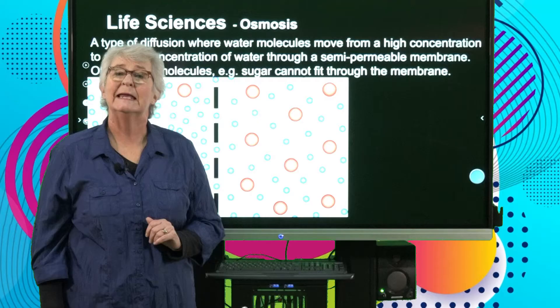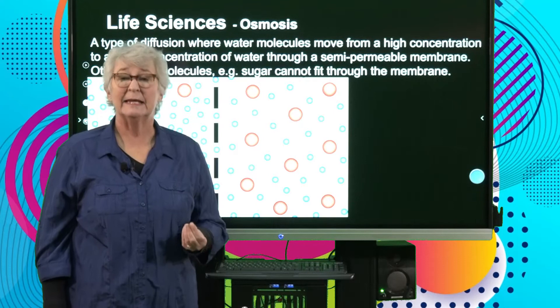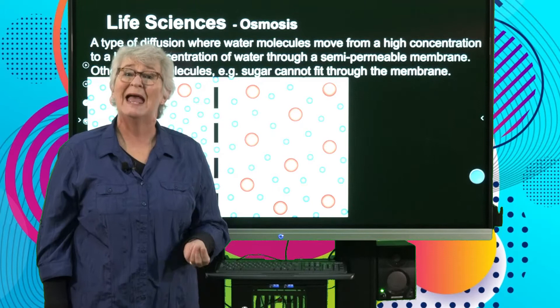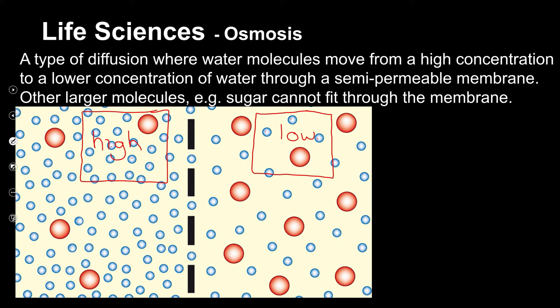The next concept is osmosis, which you should have done when you studied the cell. Osmosis is a type of diffusion, except it involves only water molecules and how they move through a semi-permeable membrane. In this example, on one side we have lots of water molecules, and on the other side we have fewer molecules. This is a high concentration and a low concentration, and the water molecules are moving through the little gaps in the membrane from high to low concentration.